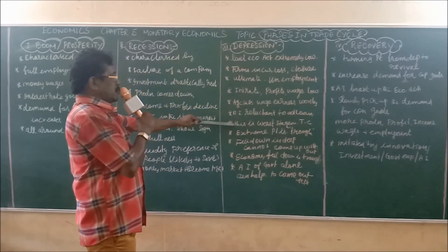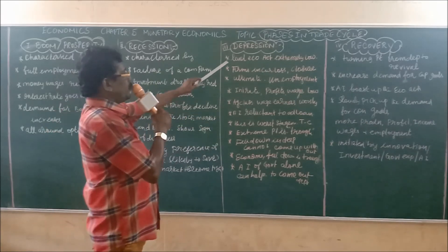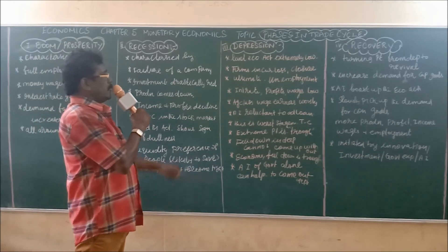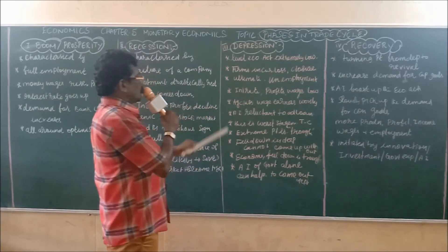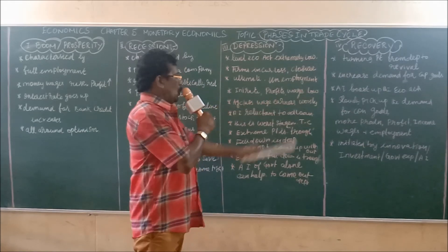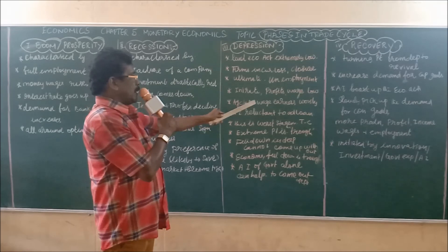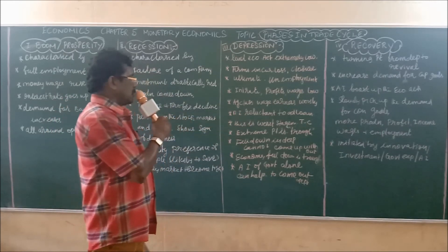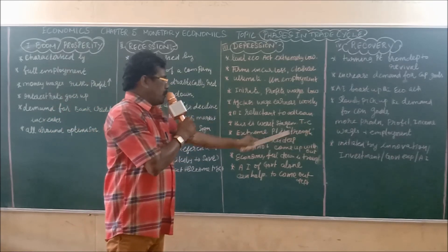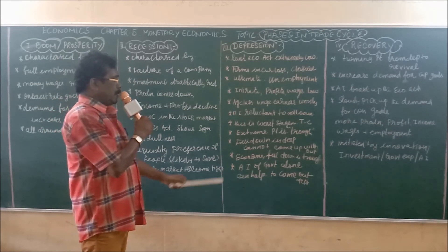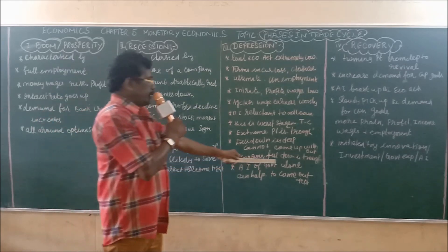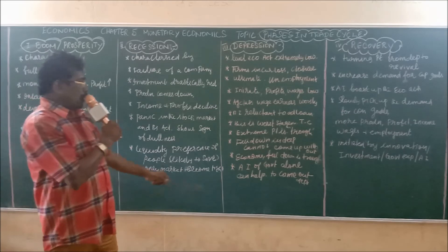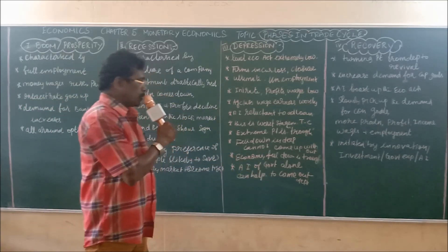The next stage is depression. The depression stage is the worst stage in the trade cycle because the level of economic activities is very low. Firms incur losses and even closure of businesses takes place. Unemployment is at its ultimate level; interest rate, profit, and wages are very low. Agricultural class of people as well as others are severely affected. Banking institutions deny giving loans and advances. The extreme point of this scale is known as trough.